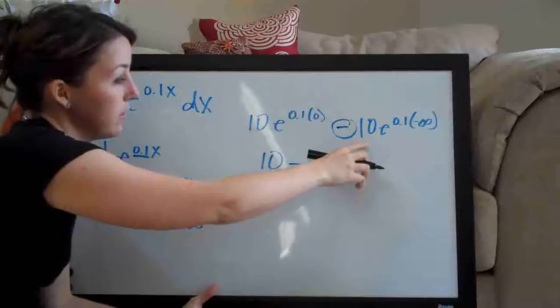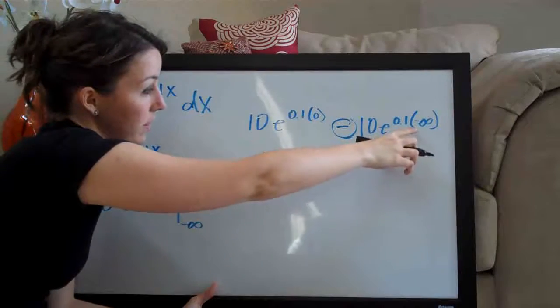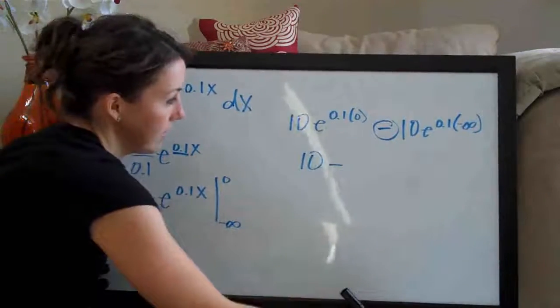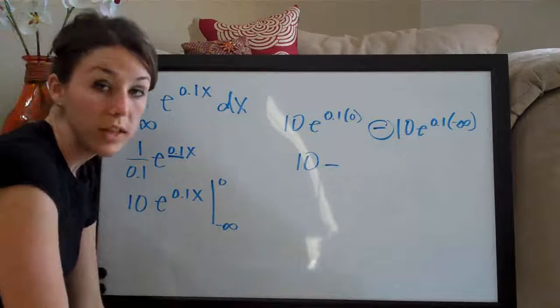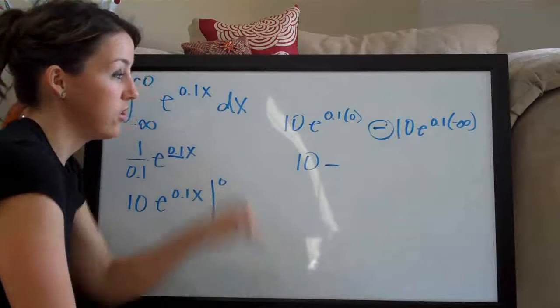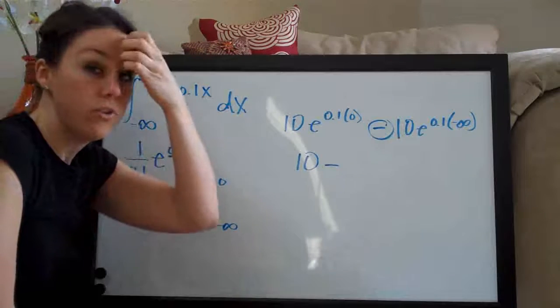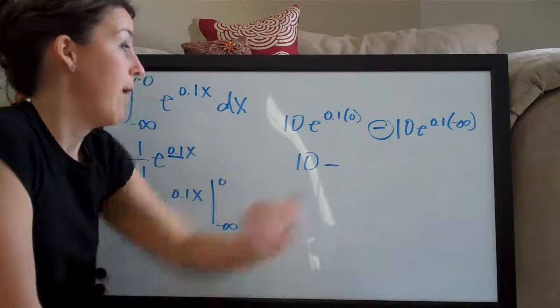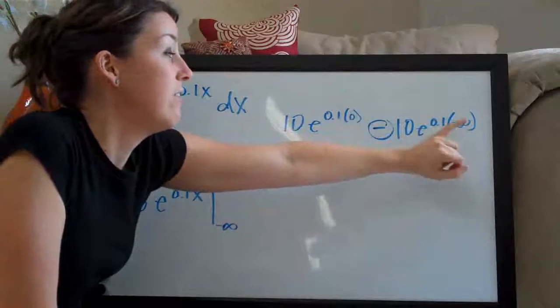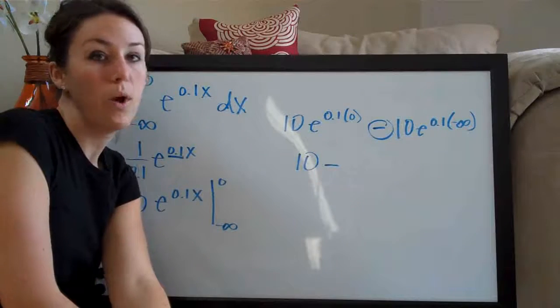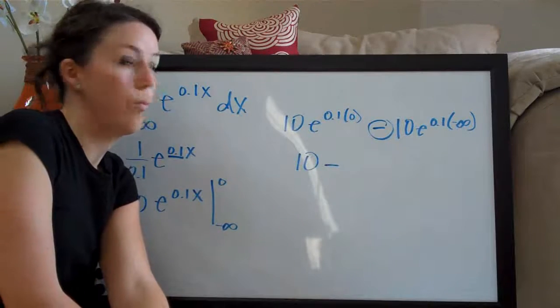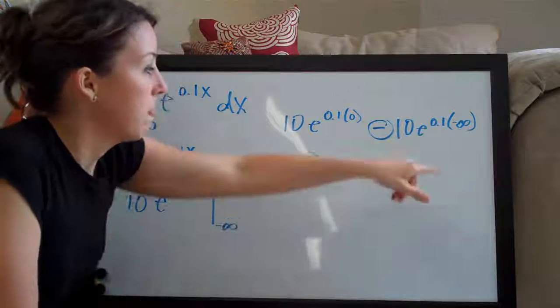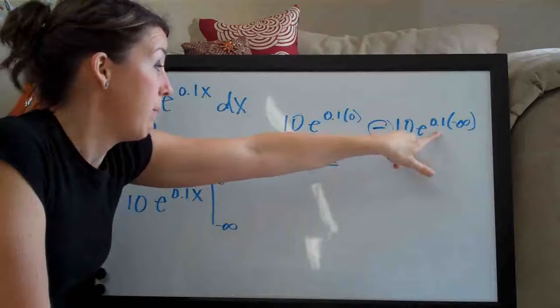The second term here, 10e to the 0.1 times negative infinity. Negative infinity, obviously, you can't truly plug negative infinity into your calculator. What I would always do is just pick a really big number. So since it's negative infinity, I would pick like negative 100,000 or negative 1 million or negative 10 million if I had to. And I would multiply that by 0.1.